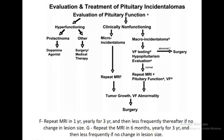This is the flow chart for evaluation and treatment of an incidentaloma. First evaluate whether it is hyperfunctioning or non-functioning. If it is hyperfunctioning, check whether it is secreting prolactin — give dopamine agonist; for others, give surgery or medical therapy. If clinically non-functioning, assess the size: if it is a micro incidentaloma, repeat MRI for any growth. If the tumor grows and becomes symptomatic, proceed to surgery. For macro, do visual field testing — if abnormal, proceed to surgery as it suggests the tumor is abutting the optic chiasm. If visual field testing is normal, evaluate for hyperpituitarism, then repeat MRI, pituitary functions, and visual field testing.